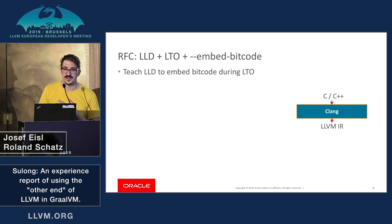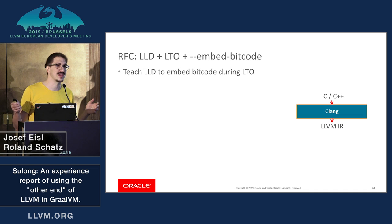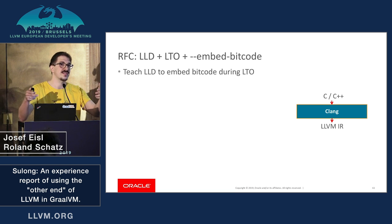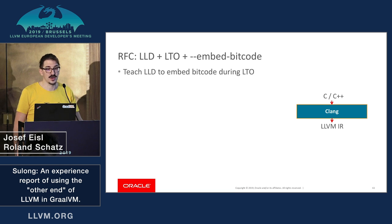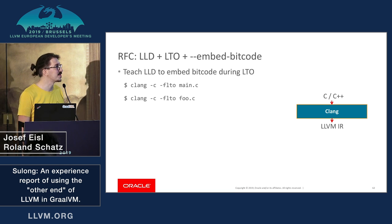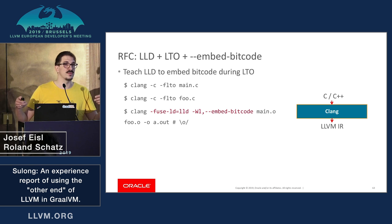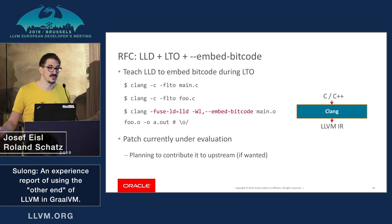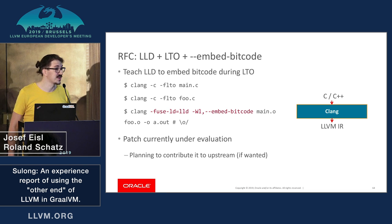What we are proposing is to teach LLVM tools to deal with this natively. Specifically, teach LLD to embed bitcode during link time optimization, because all the bits are already there — we just need to connect a few dots. So we do normal LTO and then link with a flag to tell LLD to embed the bitcode. We have actually implemented this as a small patch that we are currently evaluating internally, and we are planning to upstream it if there is interest in the community.